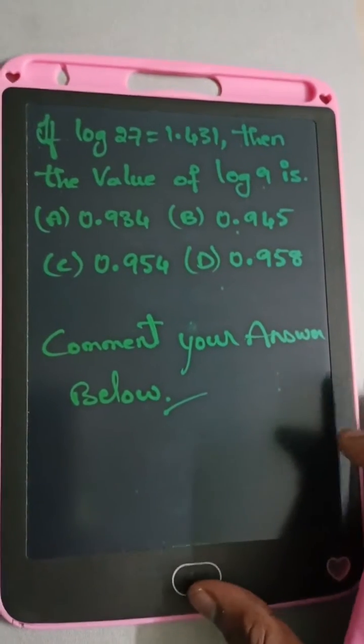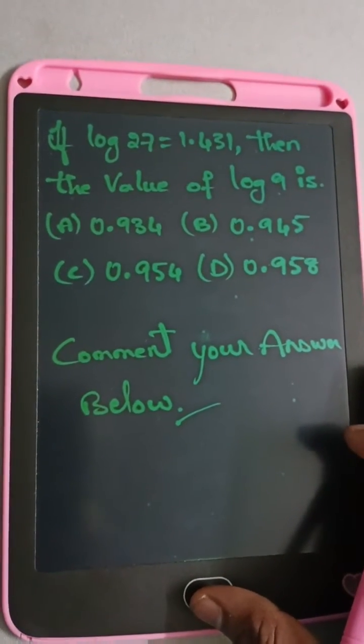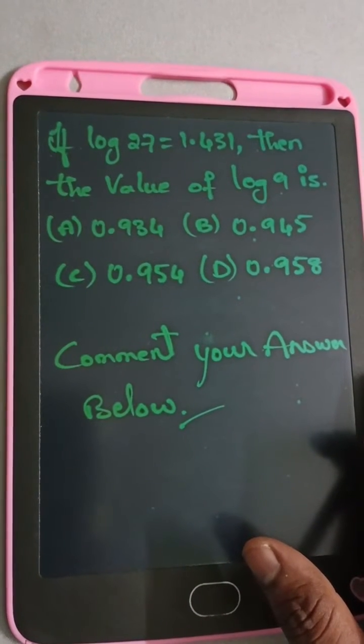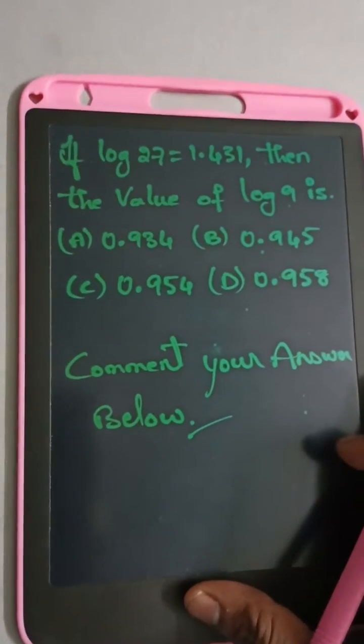Okay friends, now let's resolve this equation. The question is: if log 27 is equal to 1.431, then the value of log 9 is what? We need to find the correct answer.